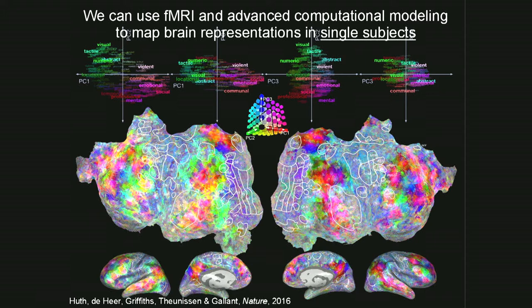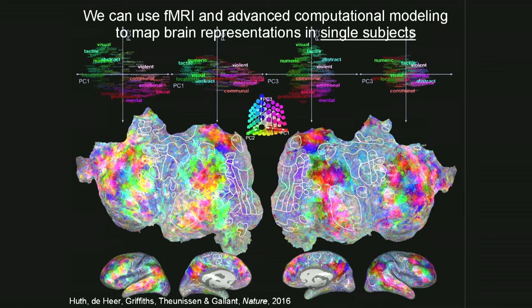Here I'm showing a brain map from one individual subject who spent about two or three hours in an MRI machine listening to stories — normal narrative stories from the Moth Radio or from Public Radio International. The colors across the surface of the brain reflect different semantic domains, different pieces of meaning that are represented at different locations in the brain. The red spots show locations in the brain that become active when you hear about social information: things about your mother, your father, your brother and sister, murder, weddings — all kinds of things that involve social information.